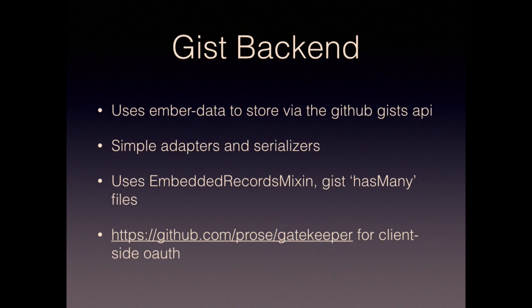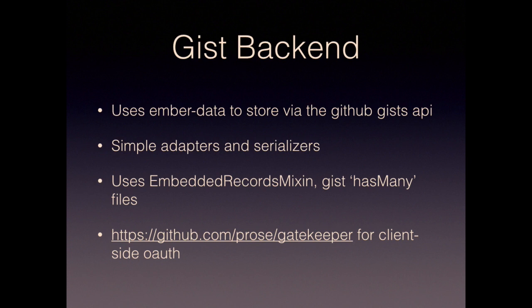The Gist backend uses Ember Data with some adapters and serializers. There's surprisingly little code here as well, even though the Gist API is slightly more convoluted and non-standard compared to the kind of REST APIs you'd normally integrate with Ember Data. We use the Embedded Records Mixin — a Gist object has many files. It's a really good example of an adapter and serializer for dealing with a non-standard API. It's quite clear and simple code to serialize the Ember Data objects into the format that GitHub needs.